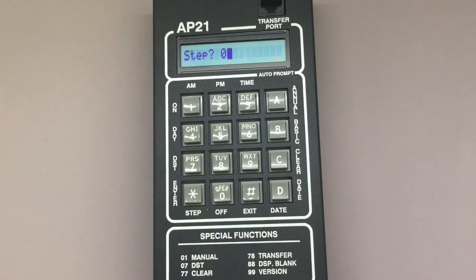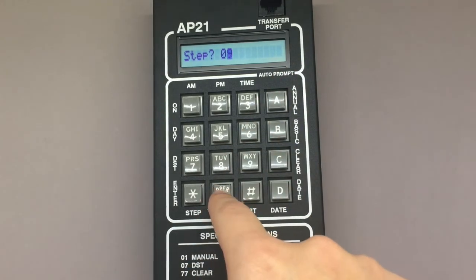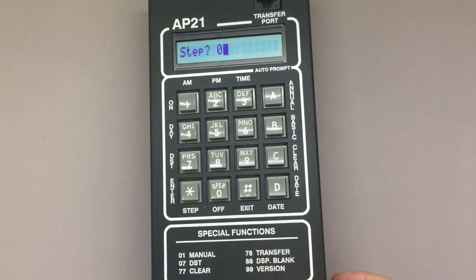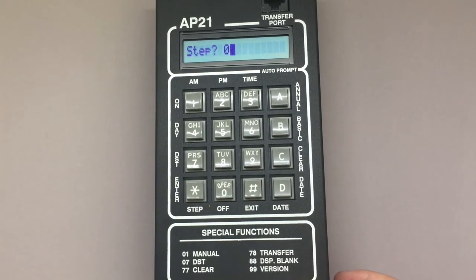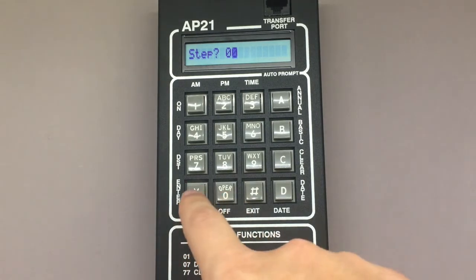But if you want to go in and add a new step or edit an existing step, you can use the keypad to type in whichever number you want. Keep in mind that the AP21 allows you to program up to 16 steps. In this example, I'm going to pretend to program my steps for the first time, so from step 00, I'm going to press star.